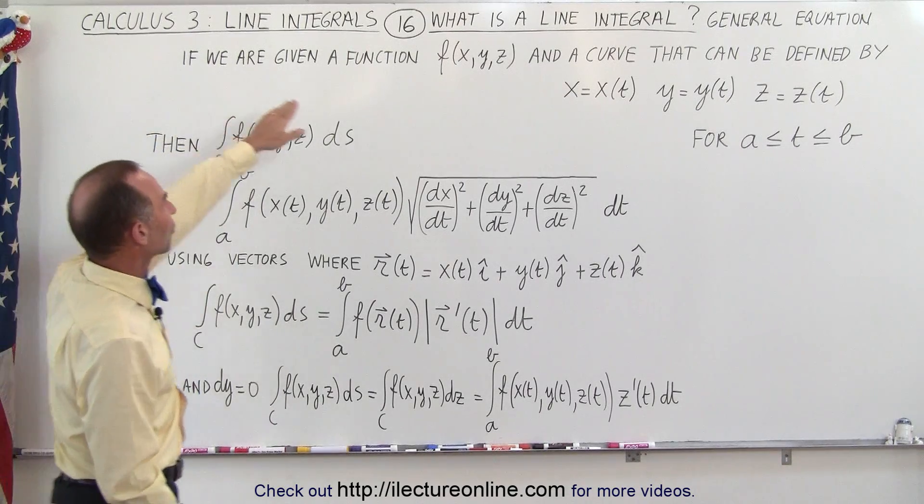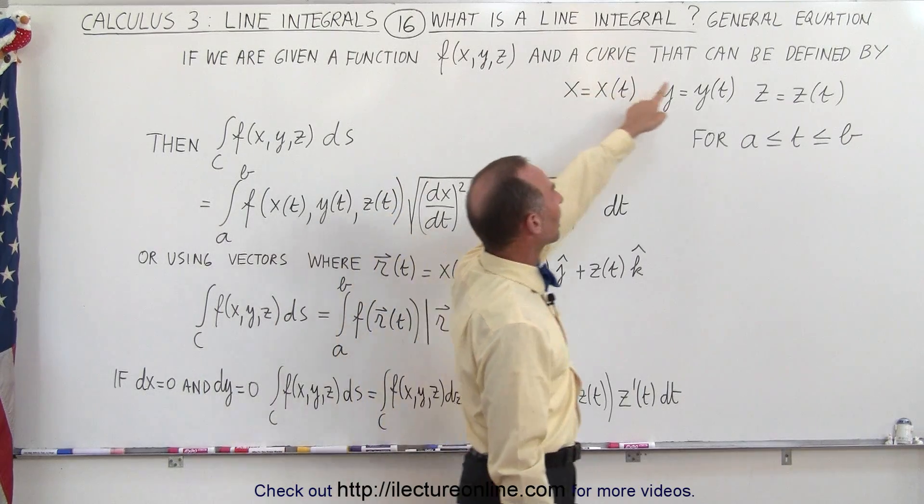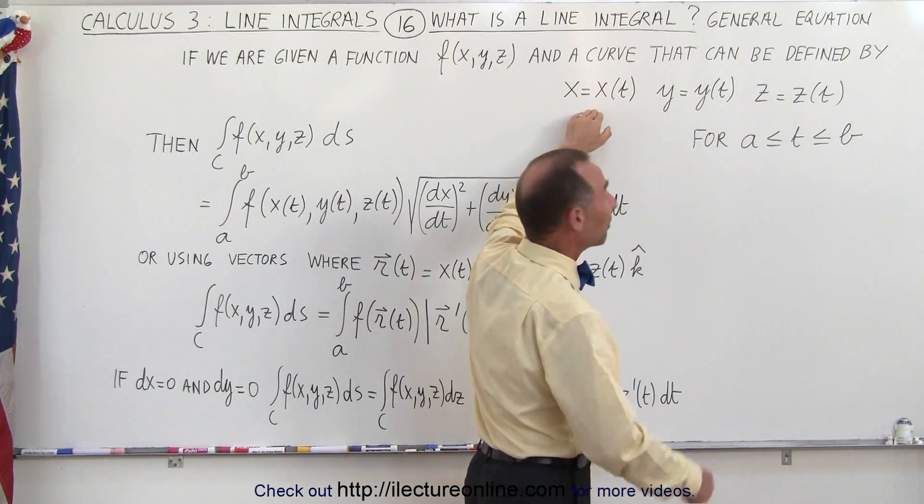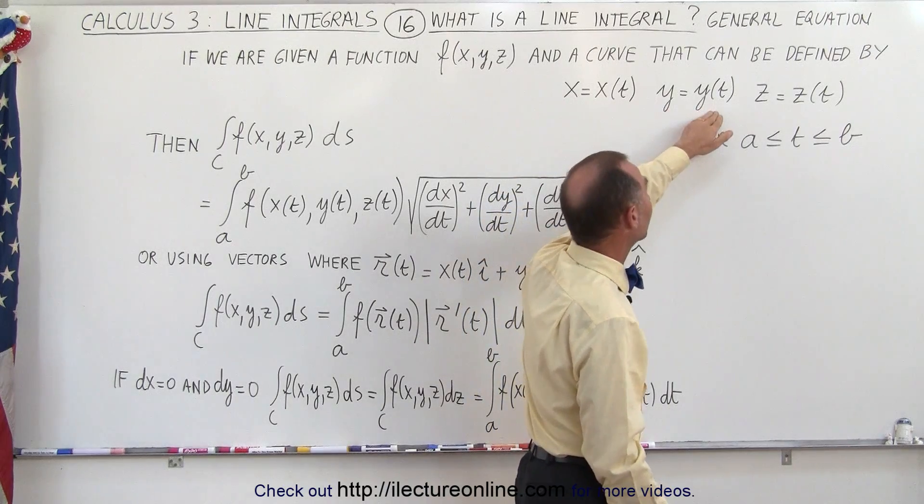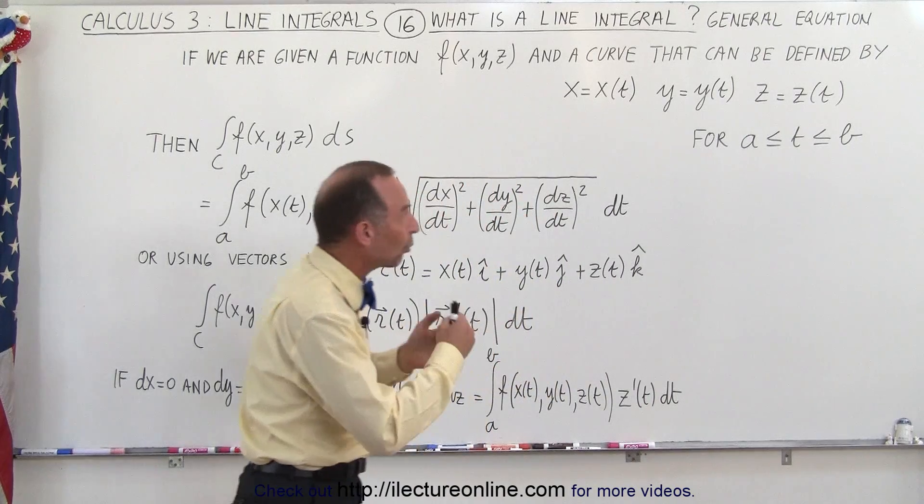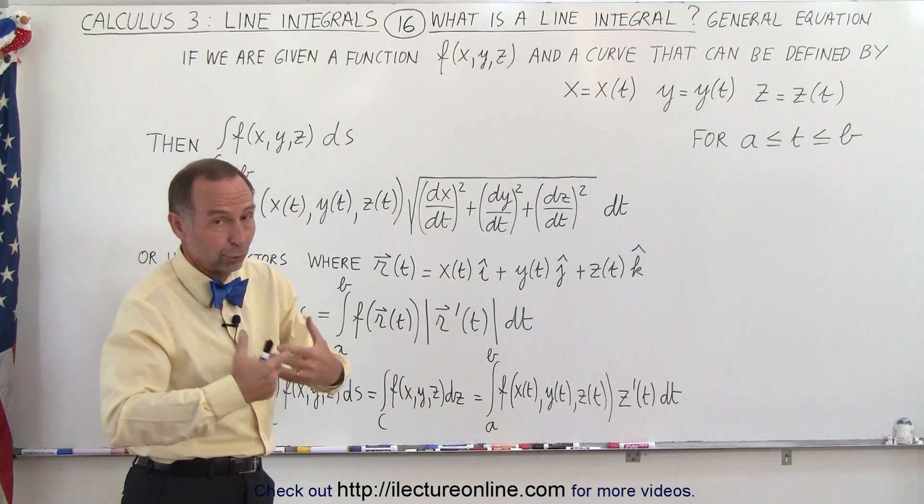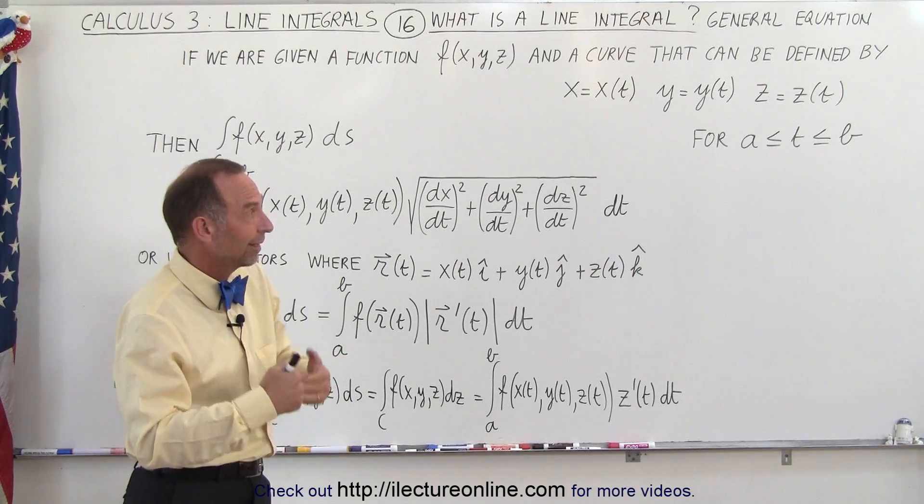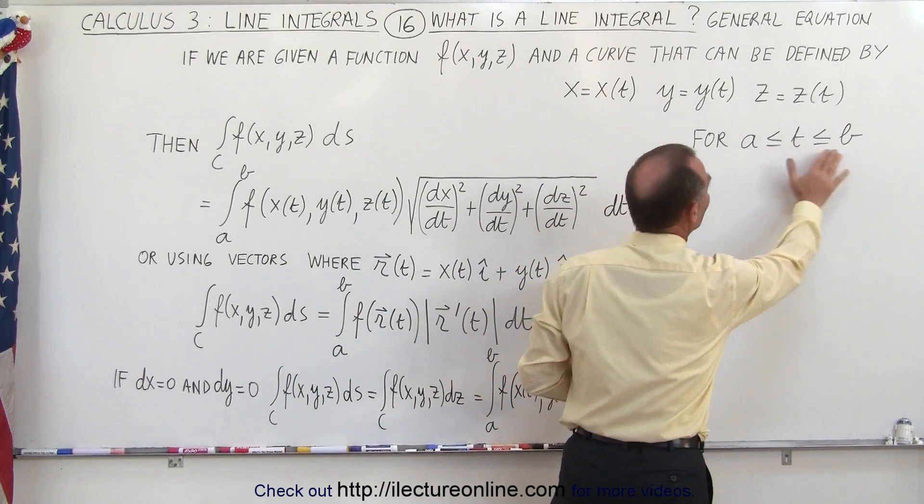Let's say that we're given a function of the variables x, y, and z, and a curve that can be defined by the parametric equations where x is a function of t, y is a function of t, and z is a function of t, so that all three of the variables x, y, and z can be expressed in terms of another variable, a parametric variable, let's say t, and then t will have some limits of integration from a to b.